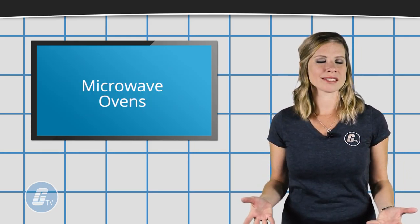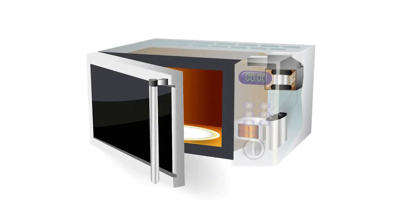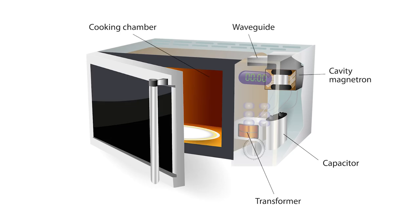Microwave ovens typically include the same base components such as a high voltage power source like a transformer, a high voltage capacitor, a cavity magnetron, a short wave guide, and a metal cooking chamber.